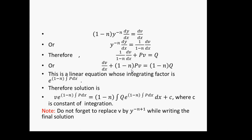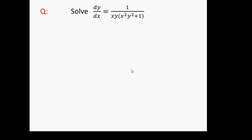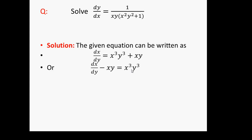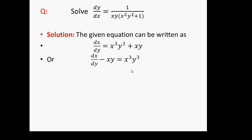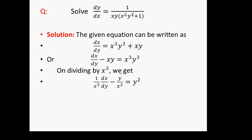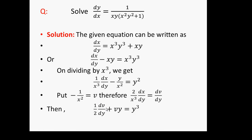Now we have an example: dy/dx = 1/(xy(x² + y² + 1)). The given equation can be written as dx/dy = x³y³ + xy. Rearranging: dx/dy − xy = x³y³, which is of the form dy/dx + Py = Qy^n. Dividing by x³ both sides, we have (1/x³)(dx/dy) − y/x² = y³. Putting 1/x² = v gives (1/(2x³))(dx/dy) = dv/dy, and the equation becomes dv/dy + 2yv = 2y³, which is linear in v.